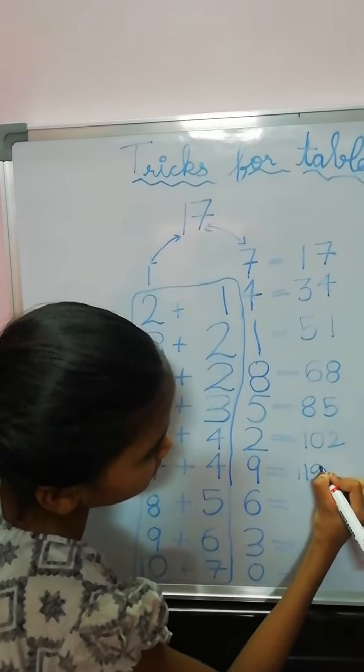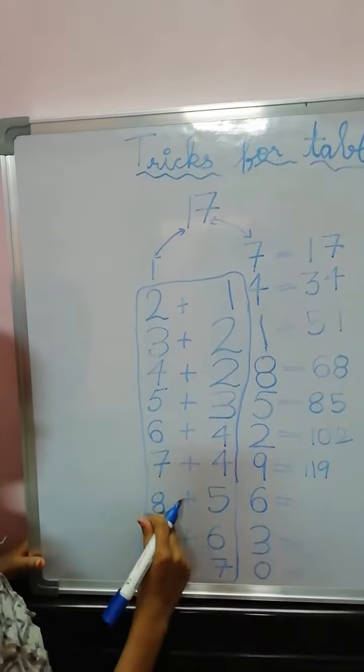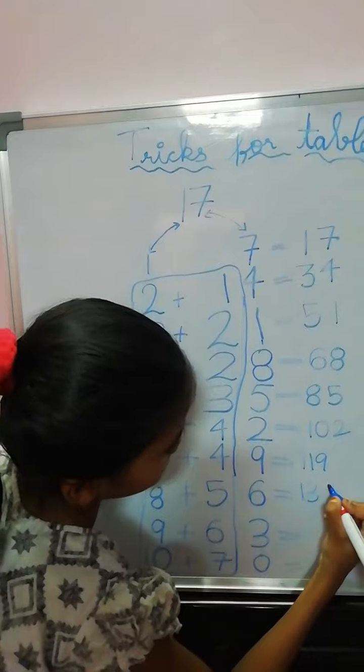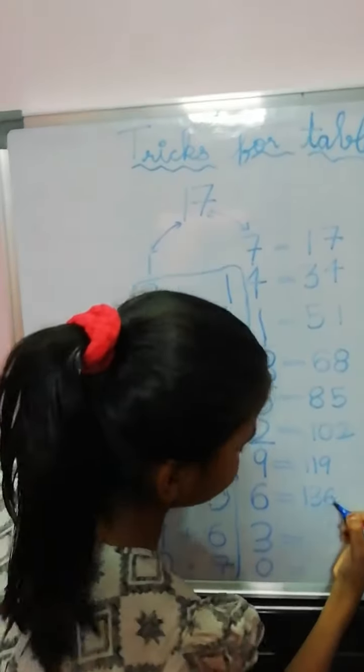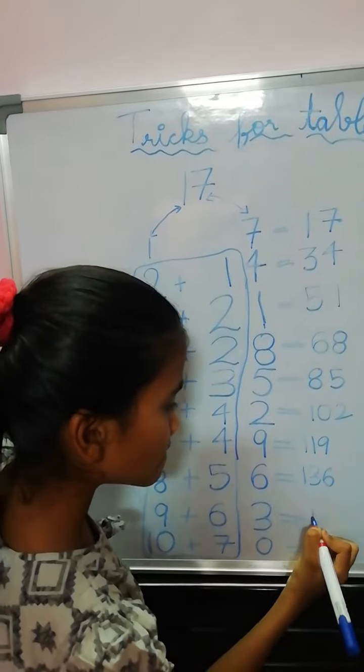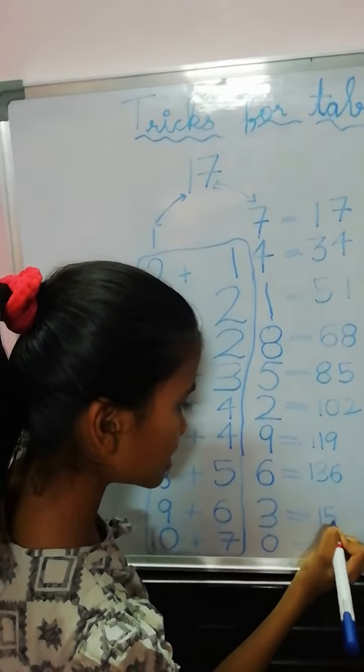17, 7's are 119. 8 plus 5, 13, and 6. 17, 8's are 136. 9 plus 6, 15, and 3.